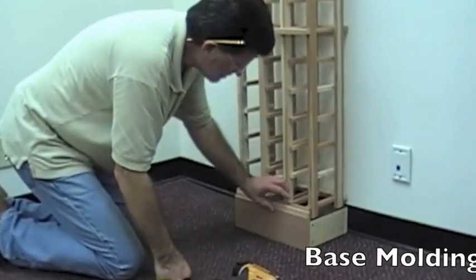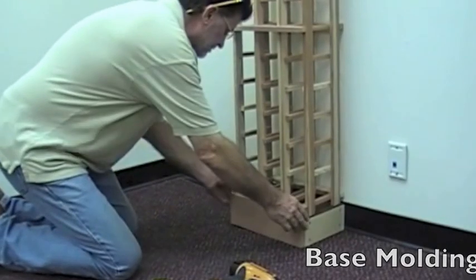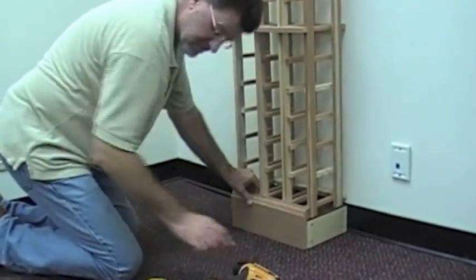Next, we'll be adding the base molding. You can see the top of the platform is stained to match your racks, as that's the only visible area once the moldings are applied.